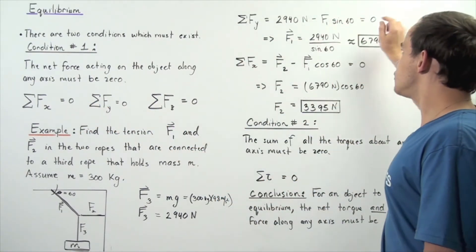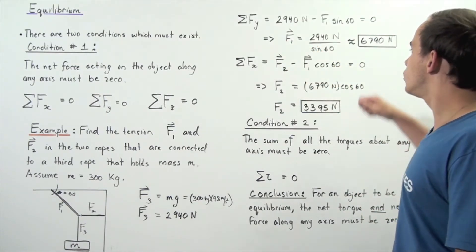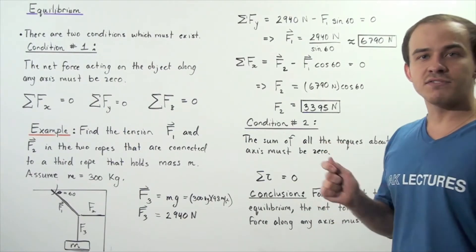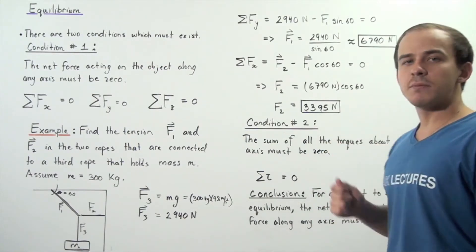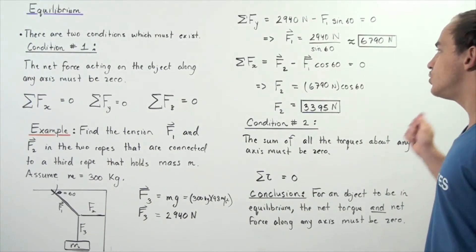So now we rearrange and we solve for force 1, and we find that force 1 is equal to 2,940 newtons divided by sine of the angle 60, and we get approximately 6,790 newtons.